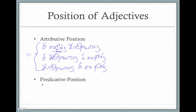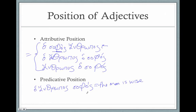Then we have the predicative position. Here we place the adjective outside the article-noun group without repeating the article: ho anthrōpos sophos. This is actually a complete sentence meaning 'the man is wise' — we don't need to use the word esti ('is'). The predicative position itself implies the verb 'to be.' So those are the two basic positions of adjectives.